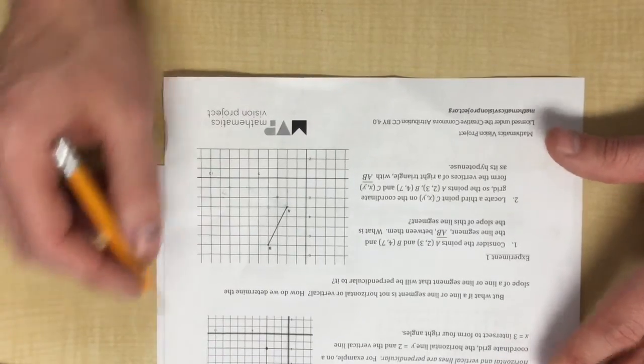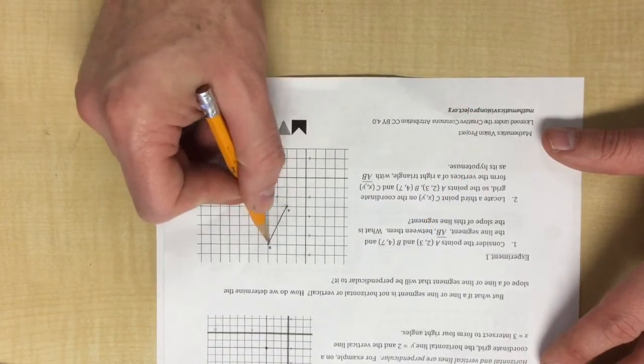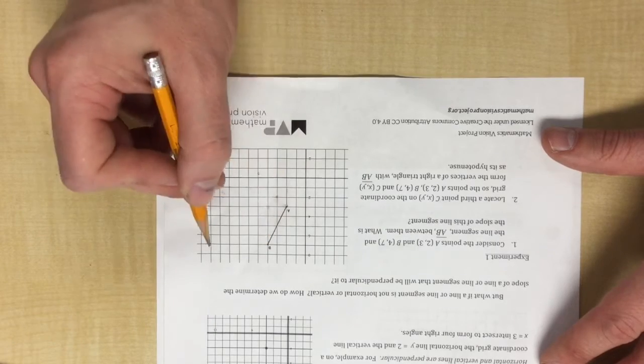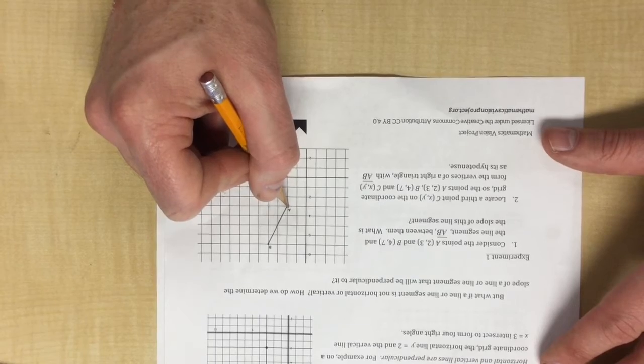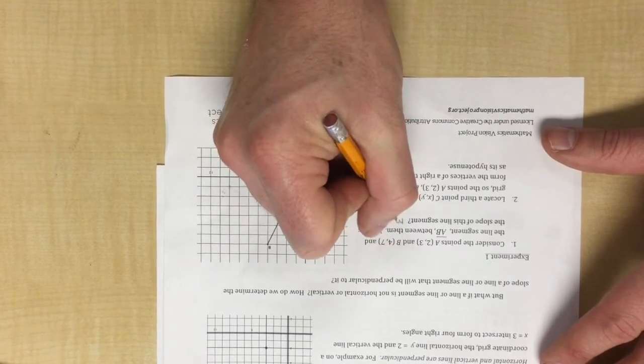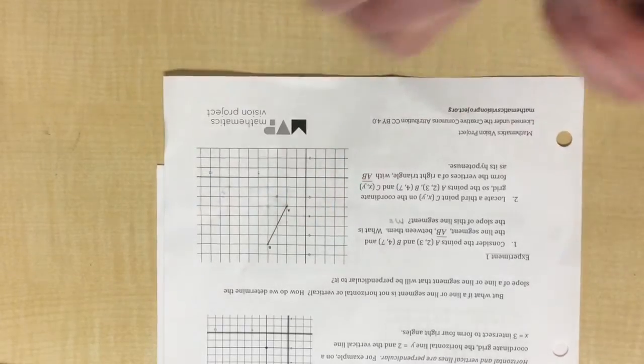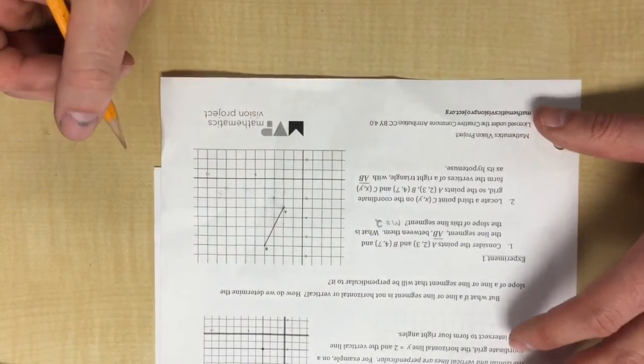It says consider the points (2,3), which is this one, and (4,7), and the line AB between them. What is the slope of the line segment? We can see real quick that it is 1, 2 and 1 over, so this gives us m equals 2, or you could write 2 over 1. Go ahead and fill that into your module.